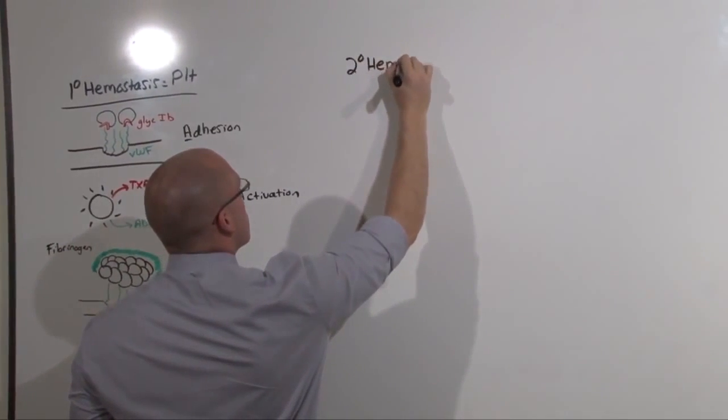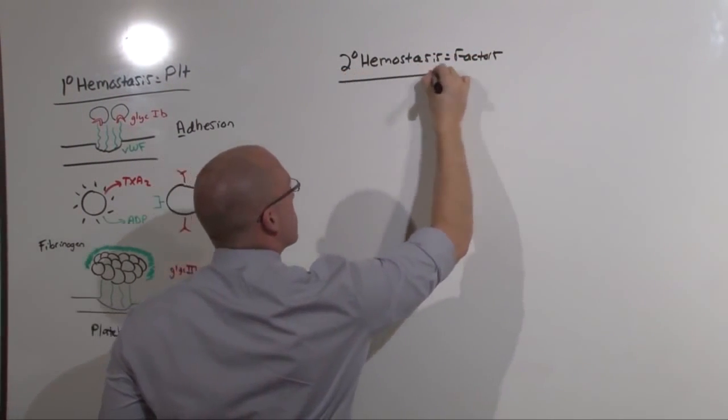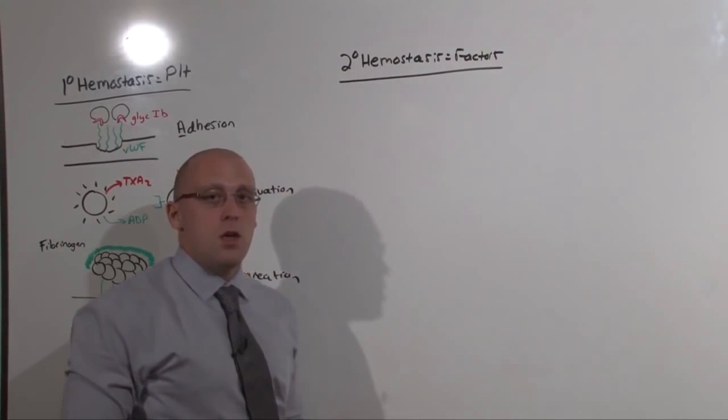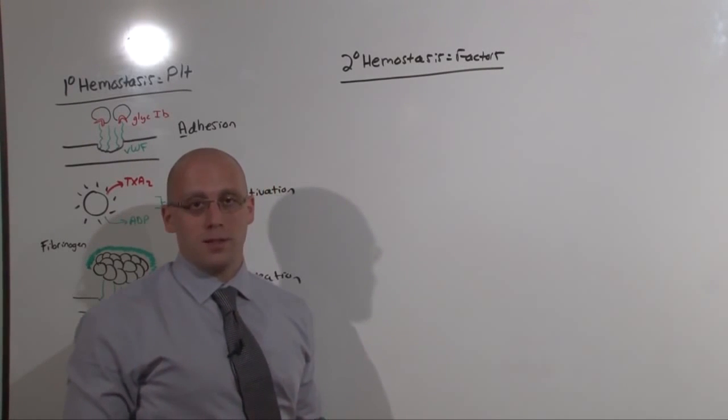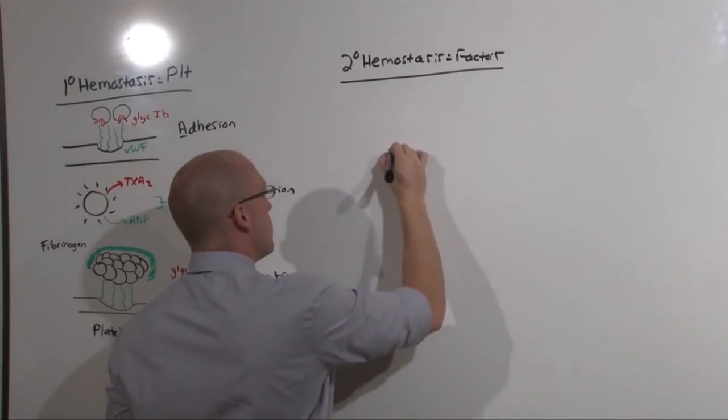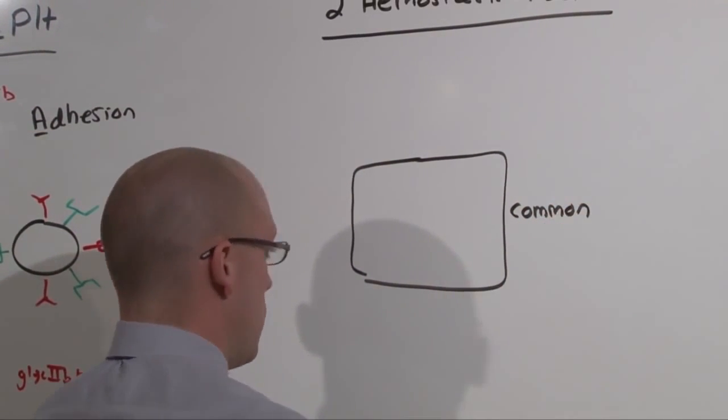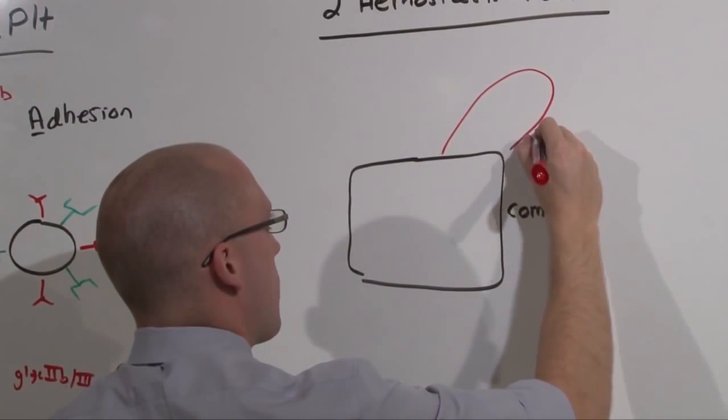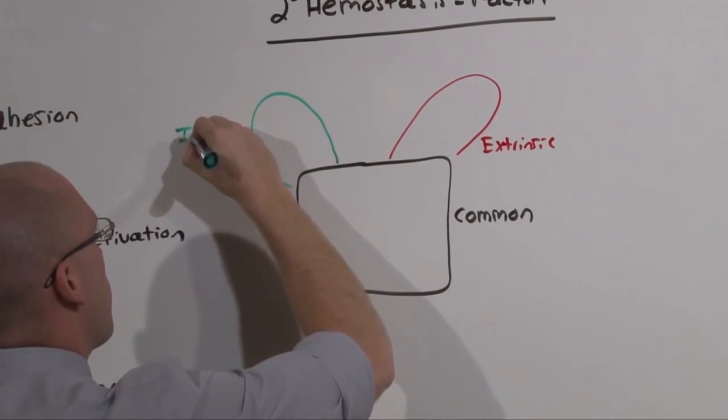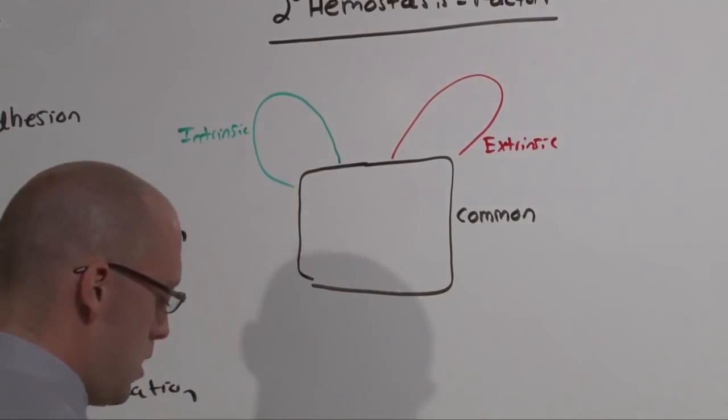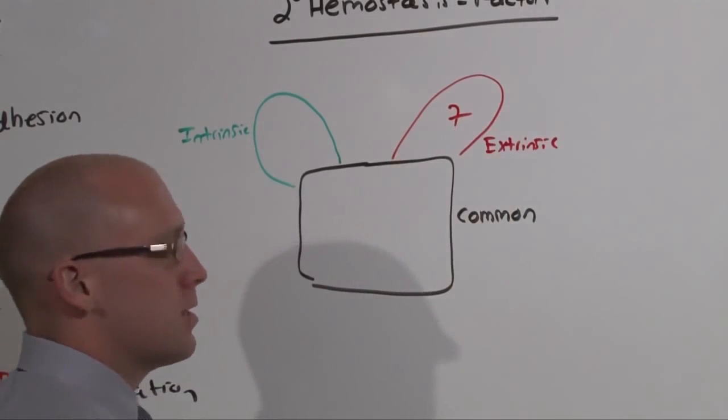Secondary hemostasis is all about factors. If you spent as much time as I did trying to learn the clotting cascade, you probably realized you wasted an awful lot of time. Let me show you an easier way of remembering what the clotting cascade does. There is a common pathway, an extrinsic pathway, and an intrinsic pathway.